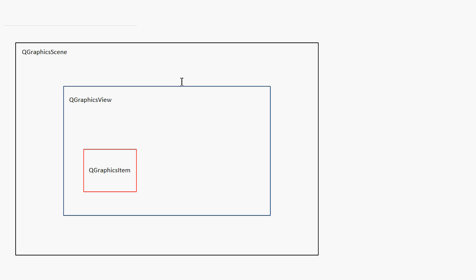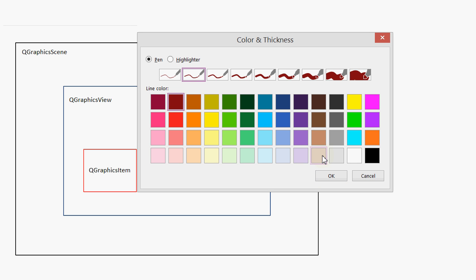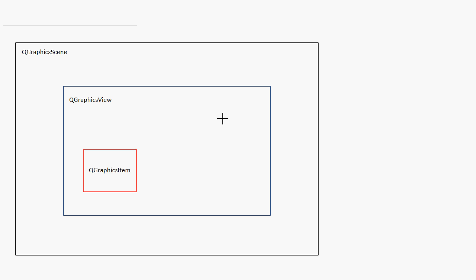I want to start off this tutorial by talking about the concept of parents and children. All QGraphic items can have parents. When a parent QGraphic item gets deleted, all of its children also get deleted. This is useful when items belong together — when they're grouped. For example, if you want to create a tank object, you may have a QGraphicsItem rectangle as the base, and another QGraphicsItem for the turret. If you make the base the parent of the turret, whenever the base gets deleted, so does the turret. But if the child gets deleted, the parent does not.